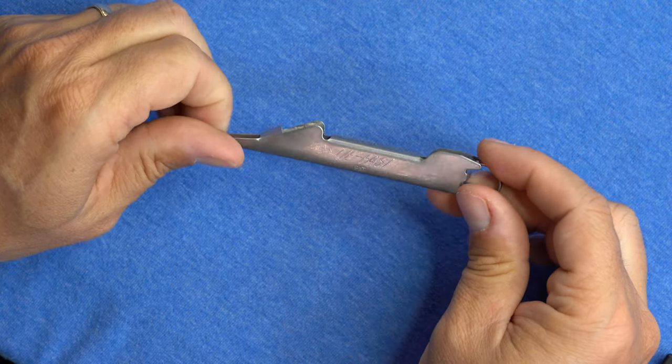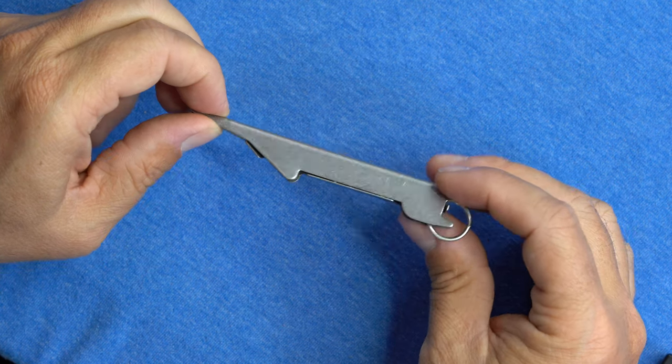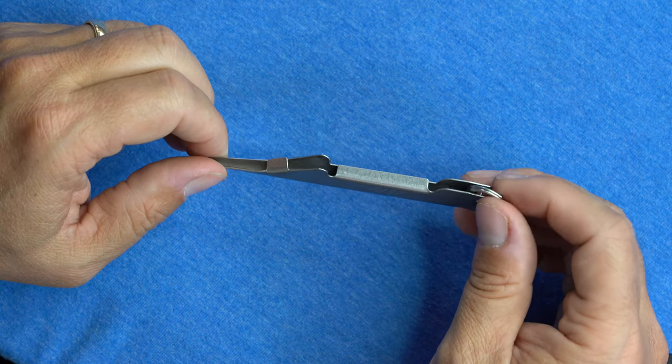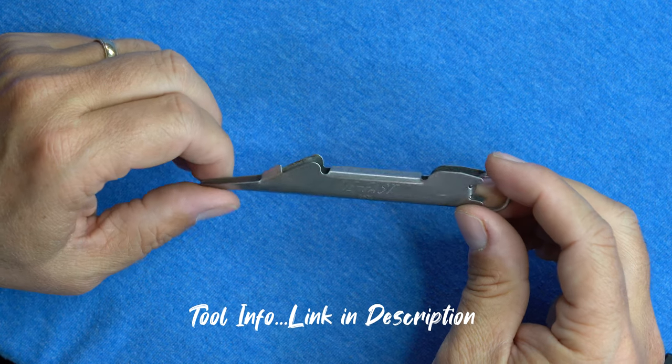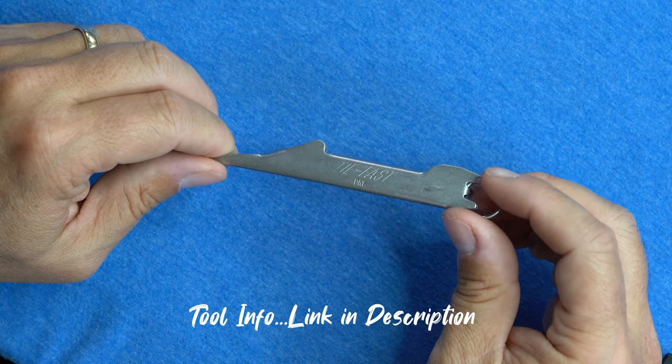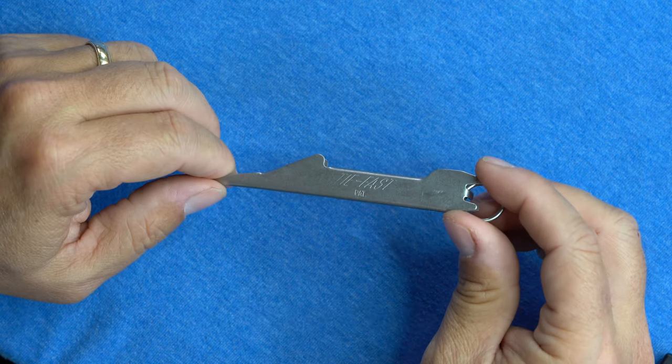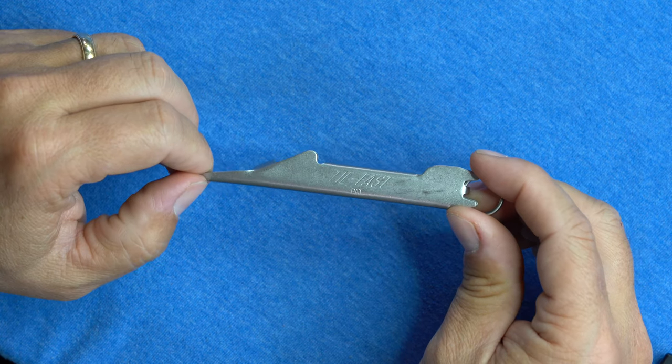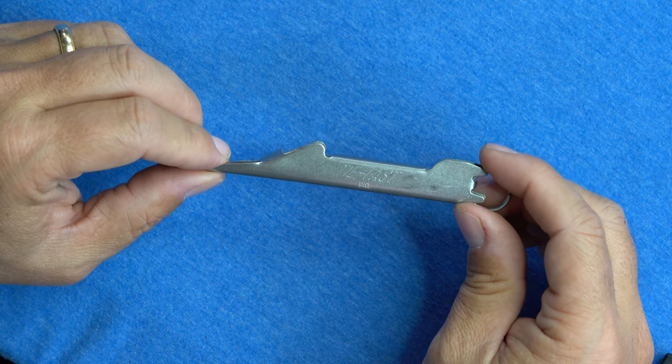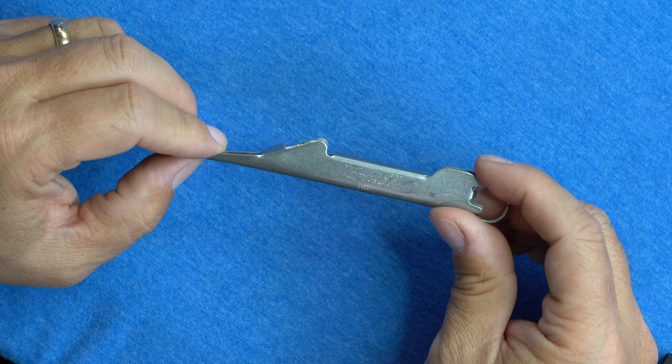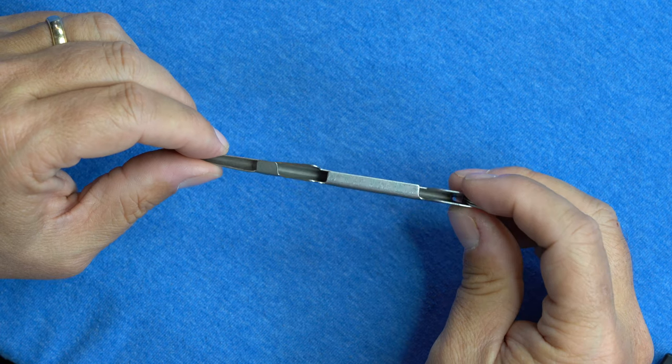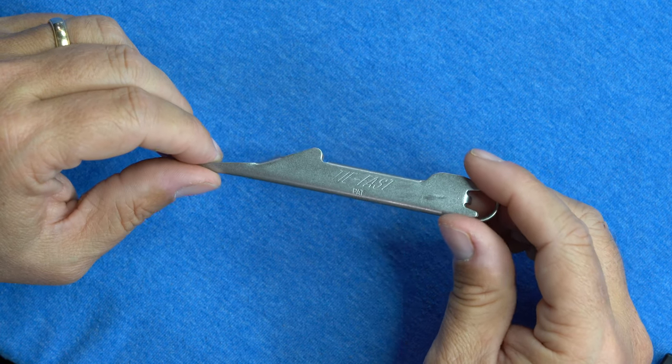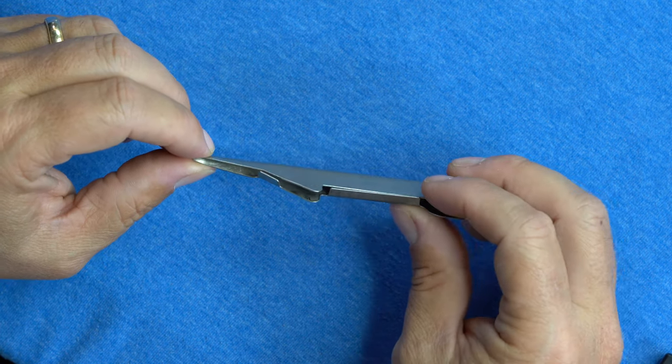Alright, so this is the TieFast Nail Knot Tool. It's a handy little tool if you learn how to use it right. You can tie clean, quick, and fast nail knots. This can be used to attach your leader to your line, your fly line, or your fly line to your backing. So it's a handy little tool, not a whole lot to it, but let's go through how to use this.